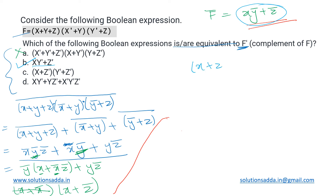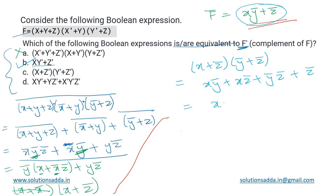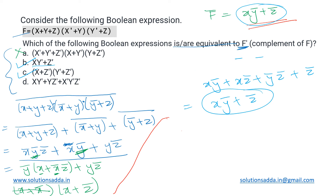Option C is (x + z̄)(ȳ + z̄). Expanding gives xȳ + xz̄ + ȳz̄ + z̄. The last three terms all have z̄ as common, so we can write xȳ + z̄. This is again the same form as f̄, so option C is also correct.